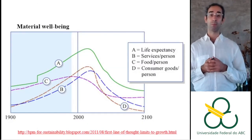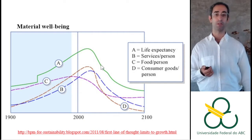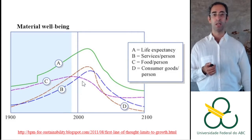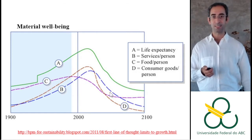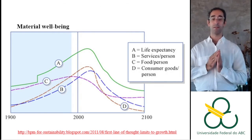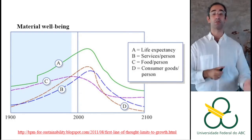What happens with well-being in this model? Life expectancy would increase until a certain point and then decrease because people would die more after the collapse. The same trend would happen with services per person, food per person, and consumption per person. You always see the same pattern: a period of very high well-being and then it starts to go down.